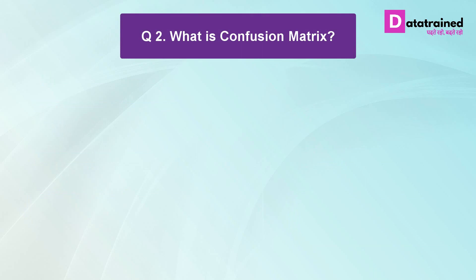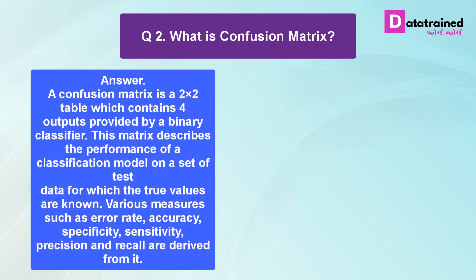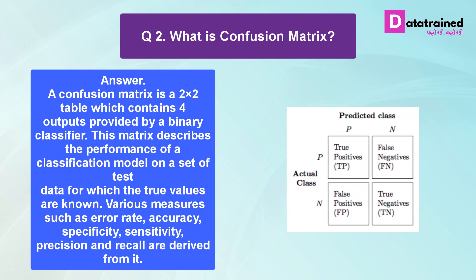Next question is what is a confusion matrix? A confusion matrix is a 2 by 2 table which contains four outputs provided by a binary classifier. This matrix describes the performance of a classification model on a set of test data for which the true values are known. Various measures such as error rate, accuracy, specificity, sensitivity, precision, and recall are derived from it.